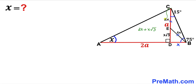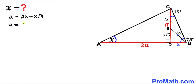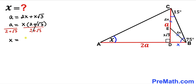We know CD equals a, so we can write a = 2x + x√3. Factoring out x gives a = x(2 + √3). Dividing both sides by (2 + √3) isolates x, so x = a / (2 + √3).